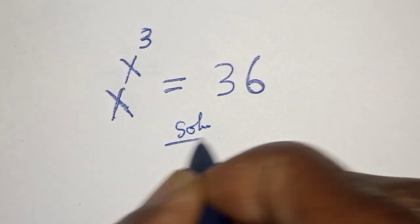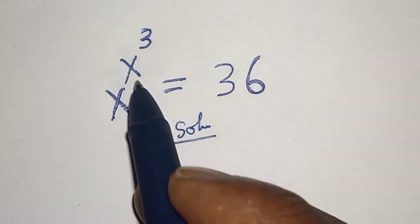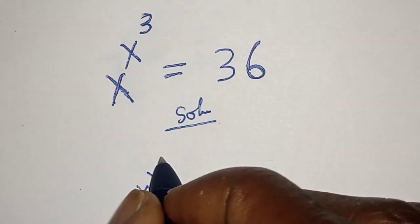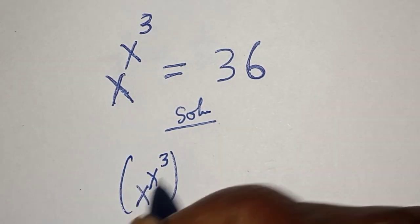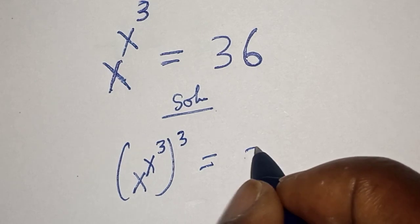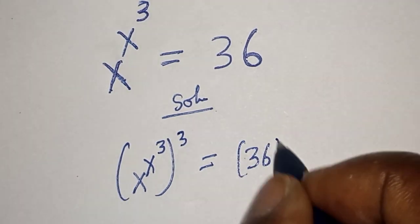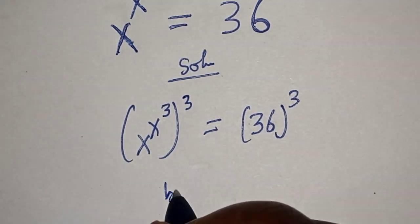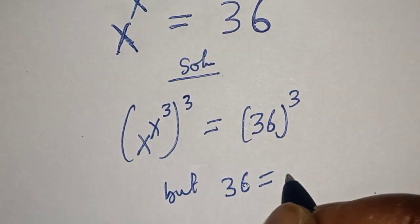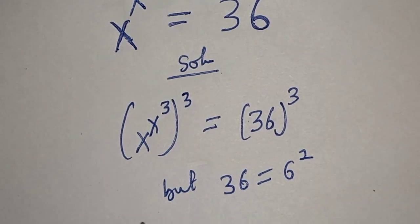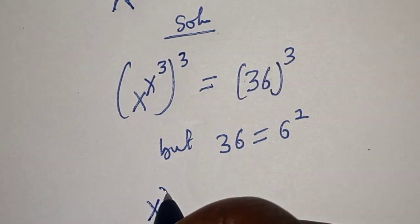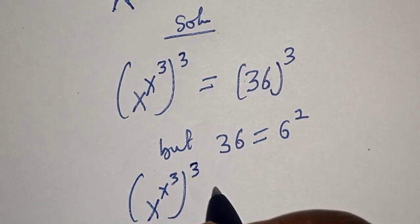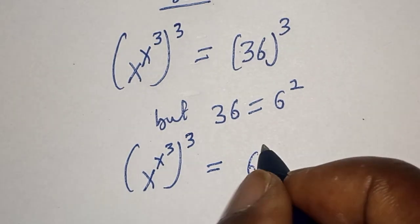Let's take the power of both sides by 3, that is s raised to power s raised to power 3, all raised to power 3, is equal to 36 raised to power 3. But 36 is equal to 6 squared, so we have s raised to power s raised to power 3, all raised to power 3, is equal to 6 squared raised to power 3.